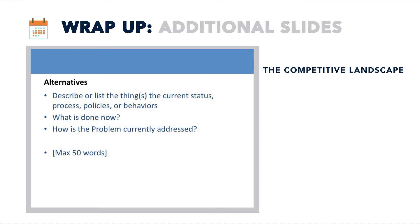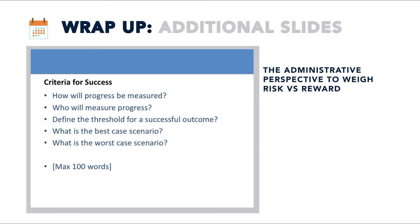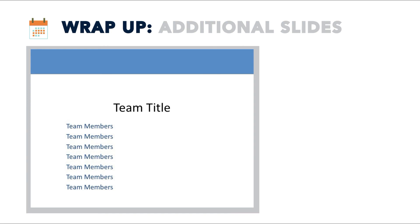Make sure to keep this short. Another optional slide is other validation — you are collecting data along the way to validate and support the elements of your value proposition, such as data about the customer, the problem, or the solution. Last is the criteria for success as an optional slide. Explain to an administrator how progress would be measured if the change were enacted. It's helpful to find the threshold for a successful outcome — for example, this solution would be a success if it could affect 25%, 50%, or maybe 75% of customers. To wrap up the presentation, make sure to repeat the team title and team members and allow the audience plenty of time for questions.